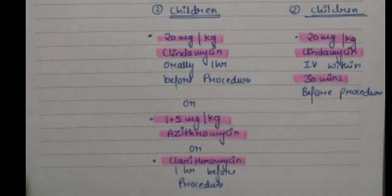In children allergic to penicillin, we give 20 mg per kg clindamycin orally one hour before the procedure, or 1.5 mg per kg azithromycin or clarithromycin one hour before the procedure. For the intravenous route, we use 20 mg per kg clindamycin 30 minutes before the procedure. That is all for today. Thanks for watching — please subscribe and like our channel.